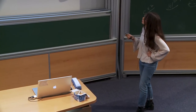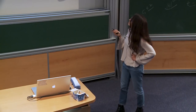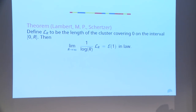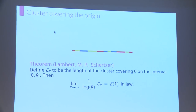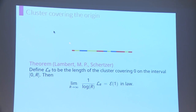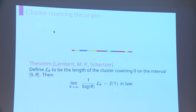The first result I want to prove is the following theorem. I look at the color cluster covering the origin of the chromosome — I call L(r) the length of this cluster — and I renormalize L(r) by log r. I claim that as r tends to infinity, this quantity converges in law to an exponential distribution with parameter one.